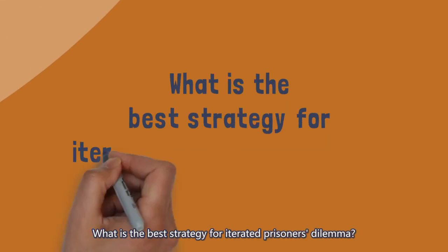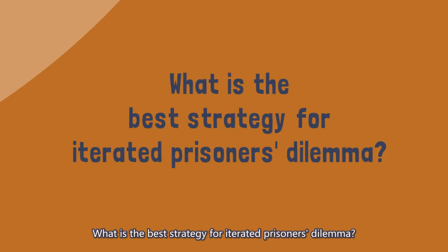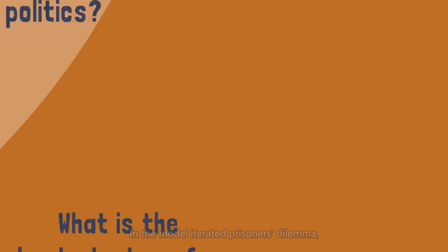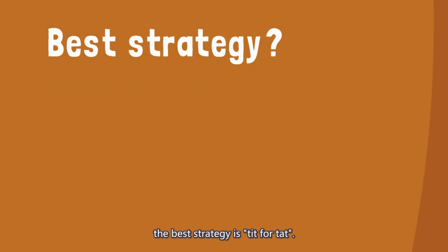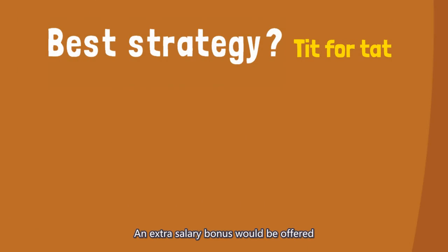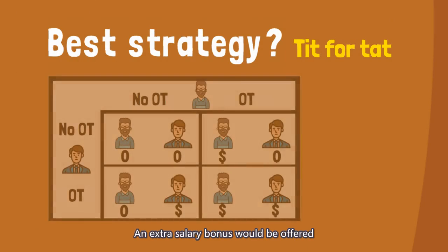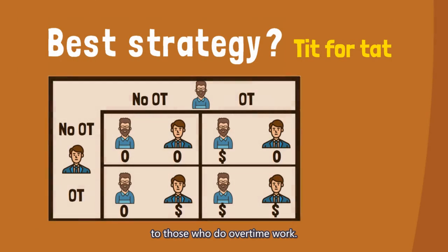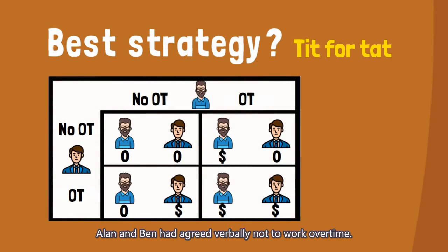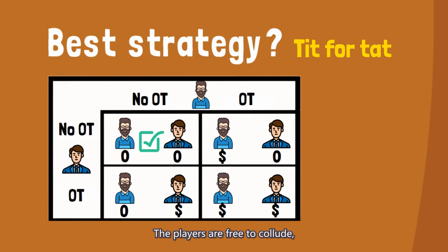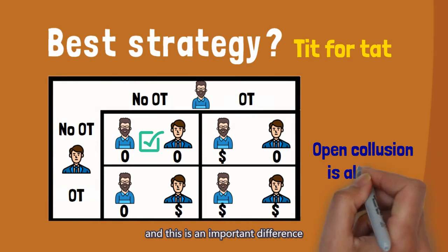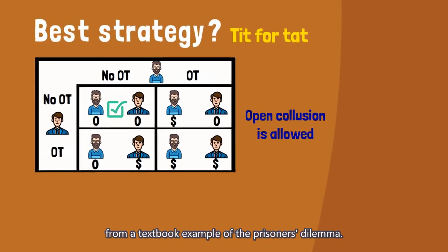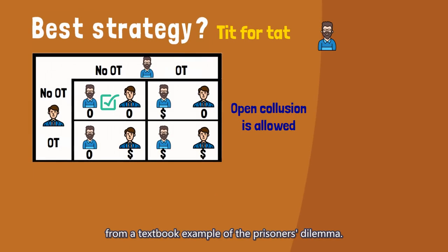What is the best strategy for the iterated prisoner's dilemma? In the model iterated prisoner's dilemma, the best strategy is tit for tat. An extra salary bonus would be offered to those who do overtime work. Alan and Ben had agreed verbally not to work overtime. The players are free to collude, and this is an important difference from a textbook example of the prisoner's dilemma.